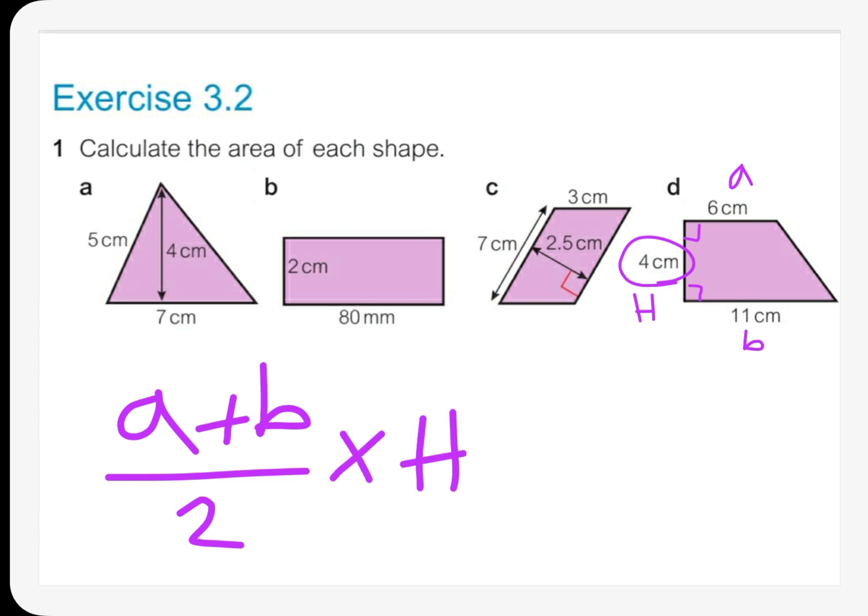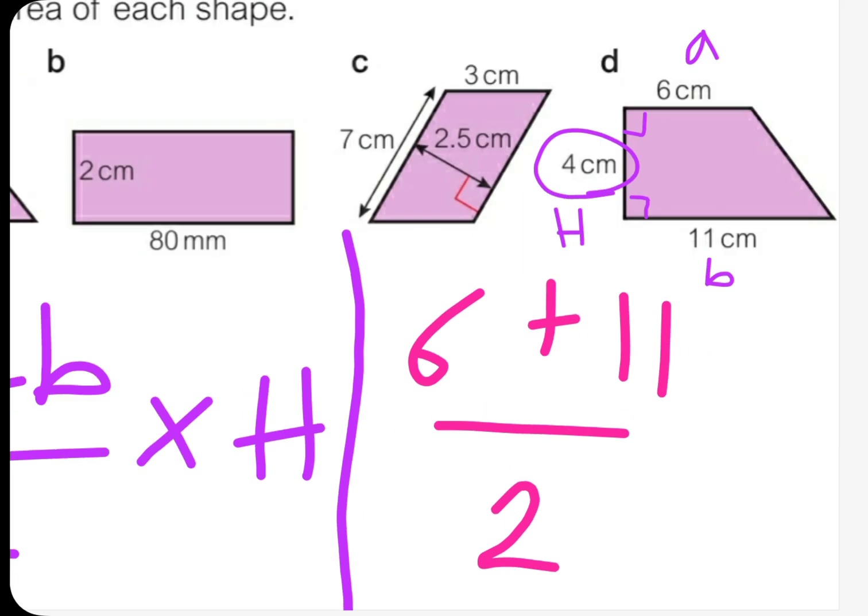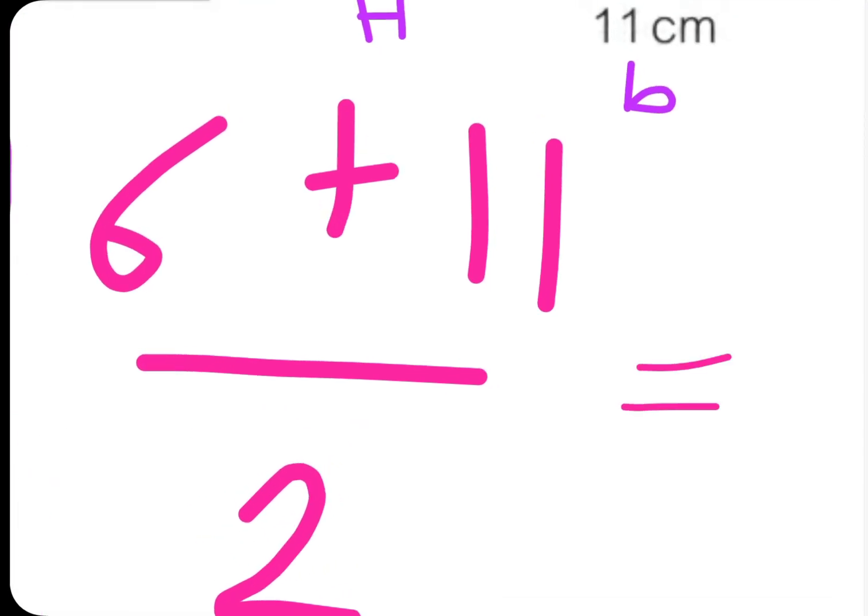A and B are what? Let's make a line. A is 6, plus 11 which is B, and then divide by 2. So 6 plus 11 is 17, divided by 2 equals—now 16 divided by 2 is 8, and then 1 divided by 2 is 0.5, so it's 8.5.